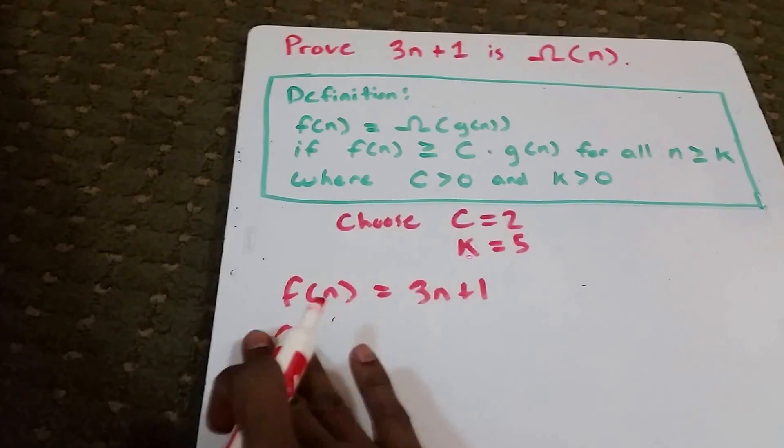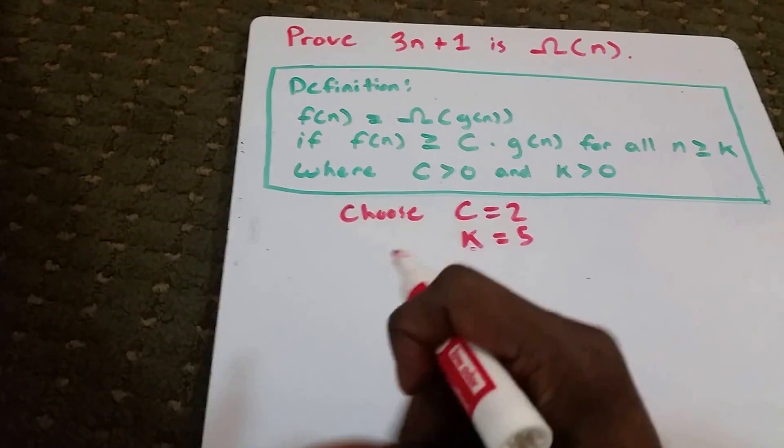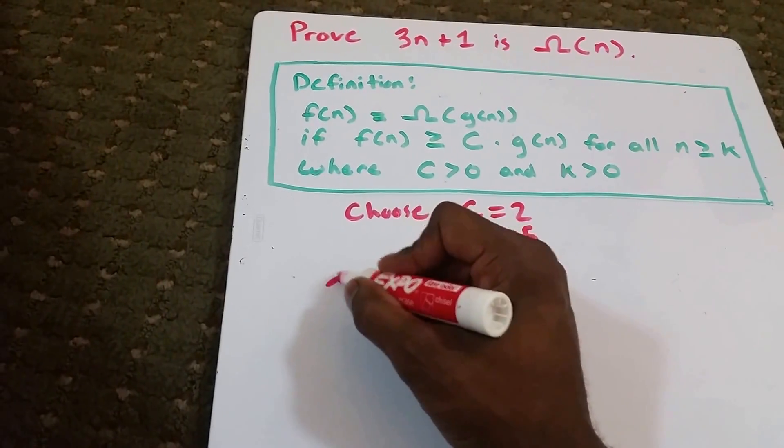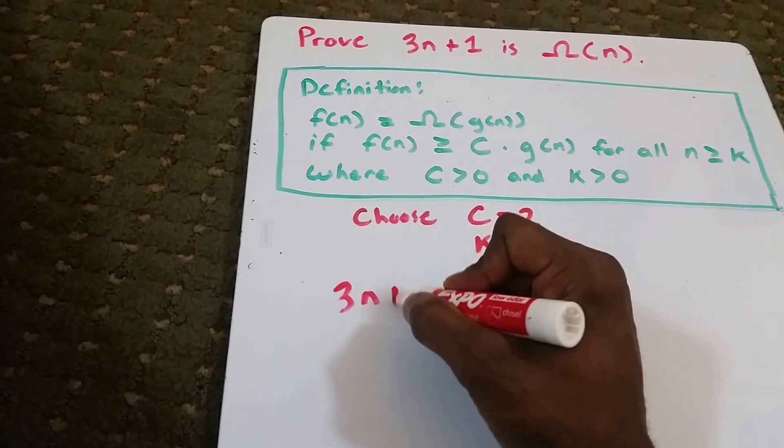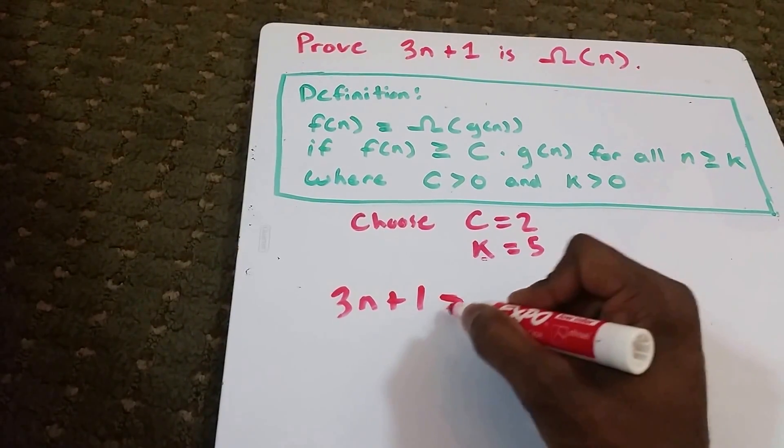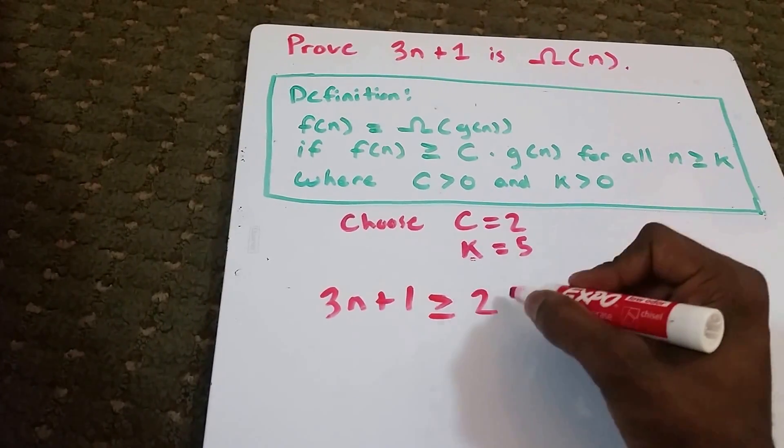I'm going to erase this to give me some room. All we have to do is show or prove that 3n plus 1 is greater than or equal to our constant 2